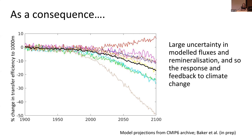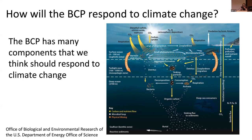As a consequence of all this uncertainty, climate models vary massively in their parameterization of the processes responsible for particle formation and re-mineralization, resulting in high uncertainty in future projections of transfer efficiency. Most models are actually predicting a decline in transfer efficiency by 2100, implying a weakening biological carbon pump, which would establish a potential positive climate feedback amplifying climate change. I'm using BCP — biological carbon pump — as shorthand for gravitational carbon pump here.